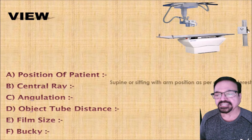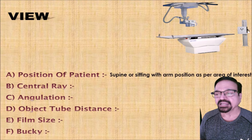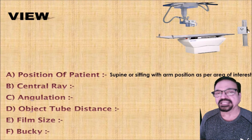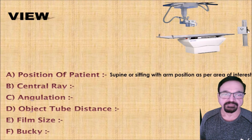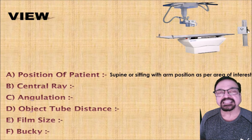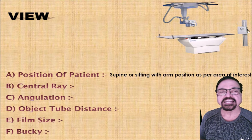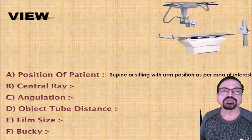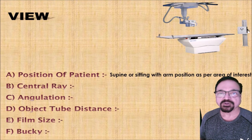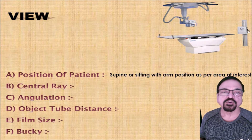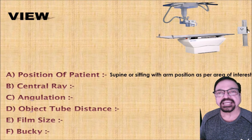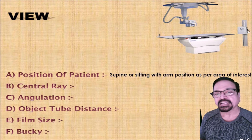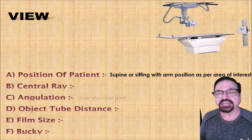Now let us go to the shoulder joint proper. The patient is kept in a supine or sitting position with arm positioned as per the area of interest. The thumb position can be neutral or externally rotated, depending on the structure of the humerus you want to visualize — whether it is the greater tuberosity, lesser tuberosity, or the neck, which is either the surgical or anatomical neck. Depending on that, we give the appropriate angulation.